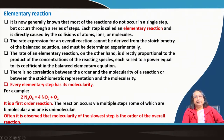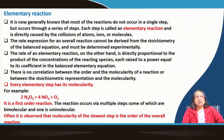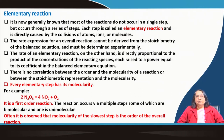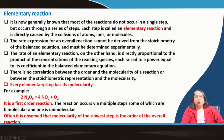There is no correlation between the order and the molecularity of a reaction, or between the stoichiometric representation and the molecularity. Every elementary step has its own molecularity, which you can find from the balanced elementary equation. For example, nitrogen pentoxide when decomposed produces NO₂ and oxygen. You might presume from the stoichiometry of 2 that it is a bimolecular second-order reaction, but experimentally we find it is a first-order reaction, because the reaction actually occurs through multiple steps — some bimolecular and one unimolecular.